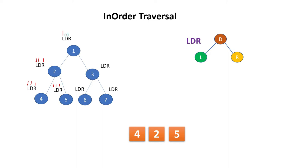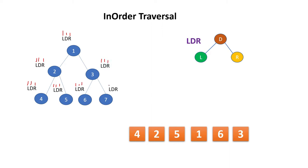Right nothing is there, then we go back. D we print that is 1, then R we go to the right side. After coming here, we go to the left. Left nothing is there, then D will print as 6. Right nothing is there, then we come back at 3, we print D that is 3. Then R we go, left nothing is there, D will be 7, and R nothing is there. So this is the way we complete the inorder traversal.